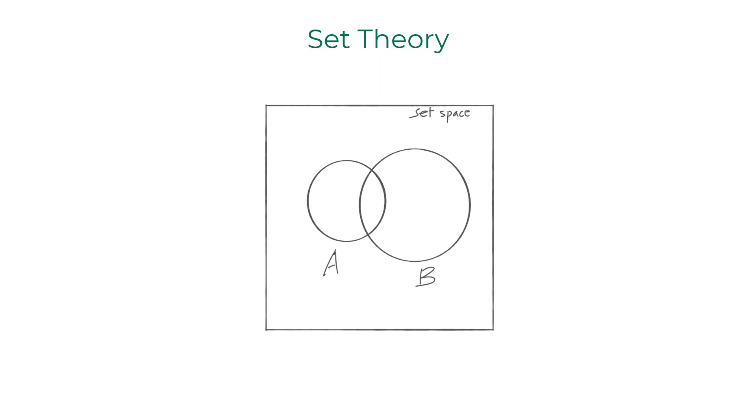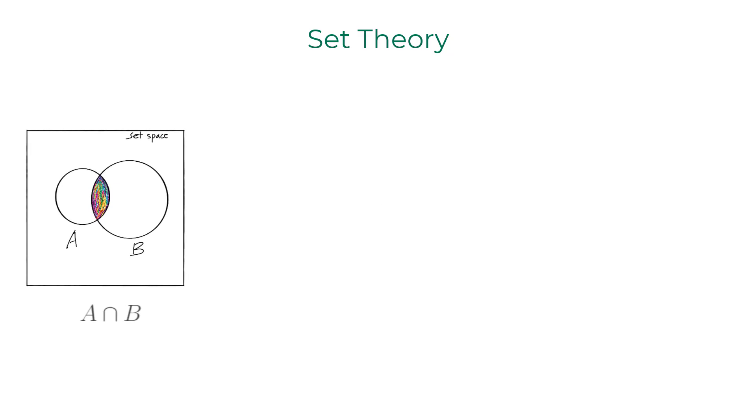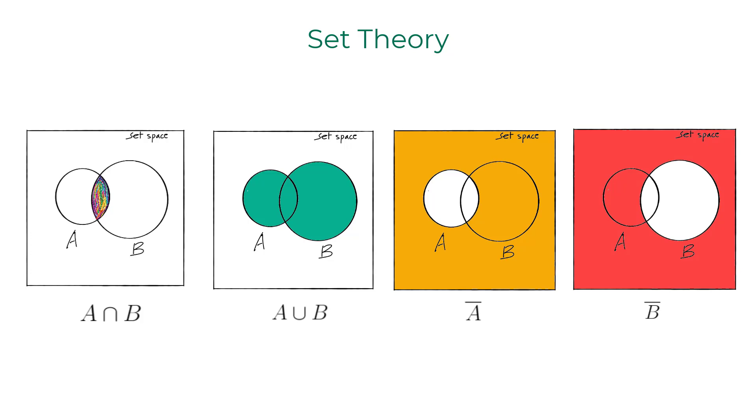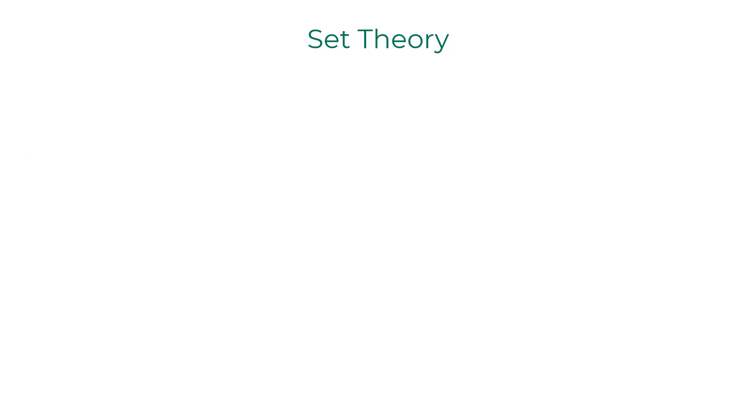Venn diagrams help us visualize the set operations better. This portion of the diagram represents A, A intersection B, that represents A union B, and this represents A complement, and that represents B complement.